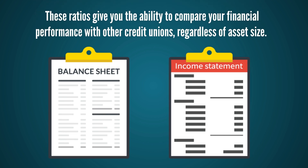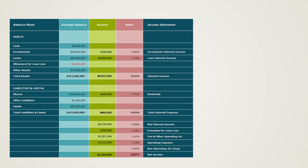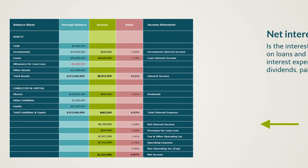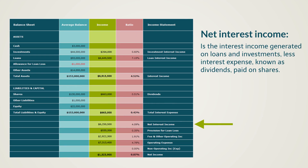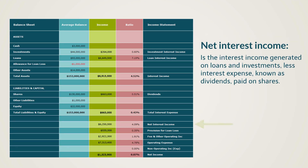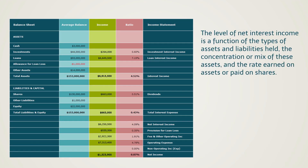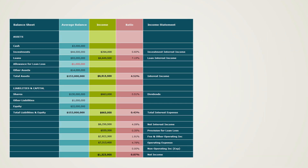These ratios give you the ability to compare your financial performance with other credit unions, regardless of asset size. This is a sample summary level balance sheet and income statement presented in a format to show the relationship between the two, and it introduces the concept of asset liability management. A credit union's primary source of income is net interest income, which is the interest income generated on loans and investments, less interest expense known as dividends paid on shares. The level of net interest income is a function of the types of assets and liabilities held, the concentration or mix of these assets, and the rate earned on assets or paid on shares. In this sample balance sheet, the credit union has total assets of $153 million. Investments of $44 million and loans of $93 million both generate interest income. However, they generate different levels of income.